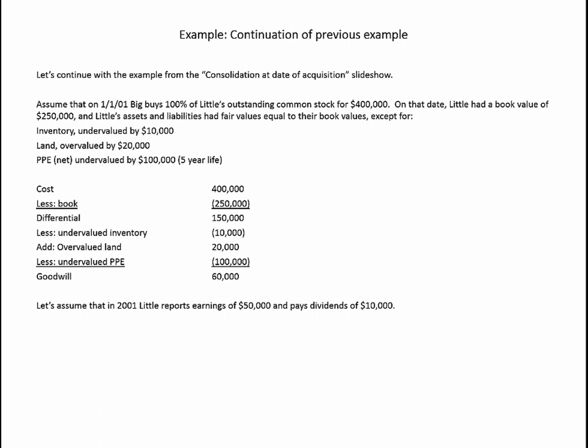On January 1, 2001, Big Company buys 100% of Little Company's outstanding common stock for $400,000. On that date, Little had a book value of $250,000. Little's assets and liabilities had fair values equal to their book values except for inventory undervalued by $10,000, land overvalued by $20,000, and property, plant, and equipment net undervalued by $100,000 with a five-year life. We've got the same analysis of cost versus book value as previously, ending up with $60,000 of goodwill.